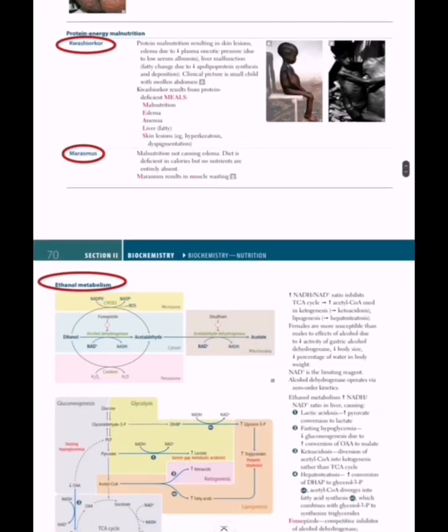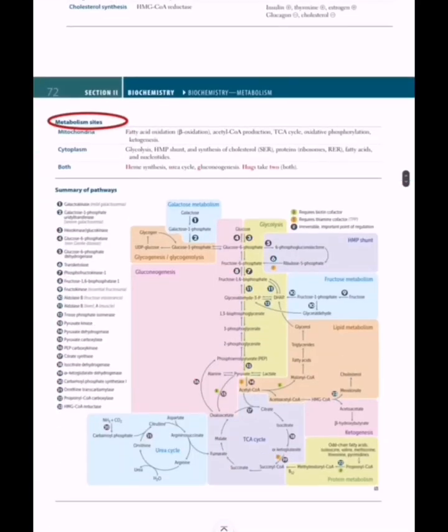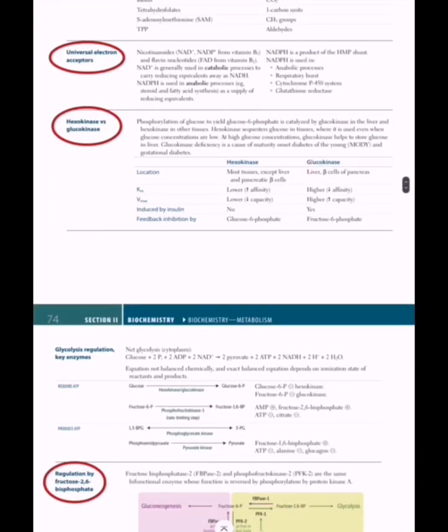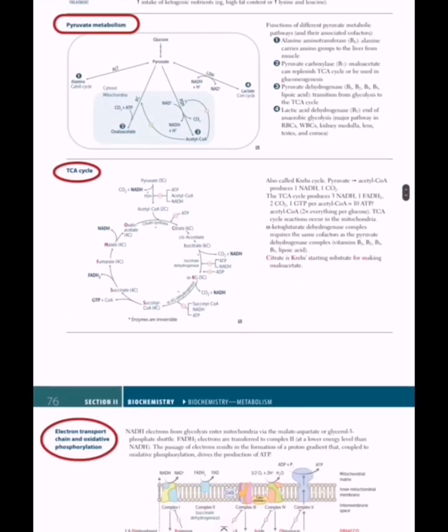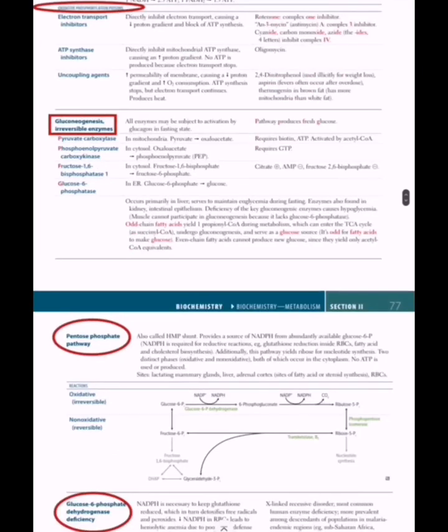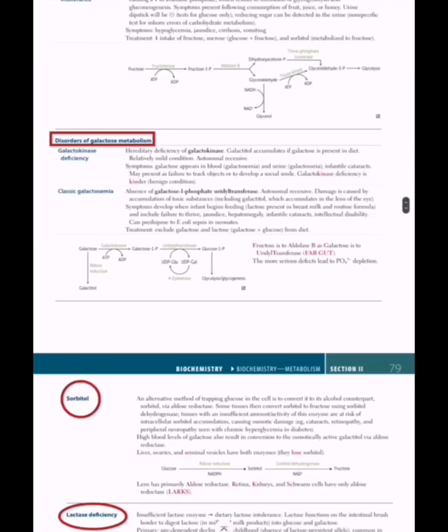Then kwashiorkor, marasmus - all these are very much important. Then the metabolism sites, then all these enzymes. It's a little hard when you go through each and everything, but at least in this rapid review kind of First Aid you can at least see exact points written there and it will help you in the last minute preparation.